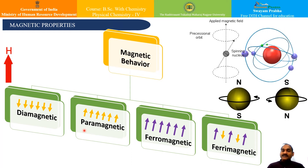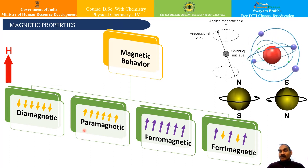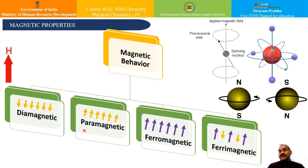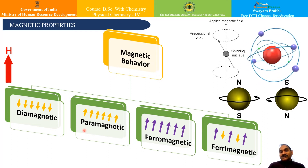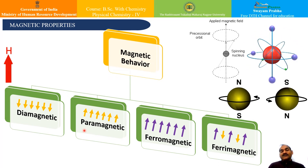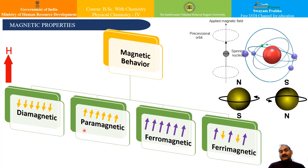When an atom is placed between the magnetic poles, the magnetic field of the atom interacts with the applied magnetic field. Because of the motion of electrons, the atom has a particular field and this atomic field interacts with the applied magnetic field. The interaction is not similar for all substances, and based on these interactions, these types of magnetic behavior are classified — diamagnetic, paramagnetic, ferromagnetic, or ferrimagnetic.